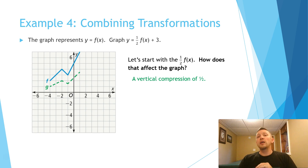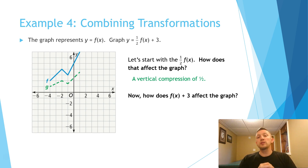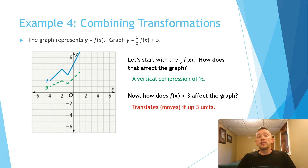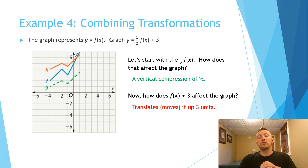Now let's take into consideration the plus 3. What does the f of x plus 3 piece do to the graph? It's going to move the graph up vertically 3 units. We take that dashed line and move every point up 3 units to get our final graph — that's what the red line represents.